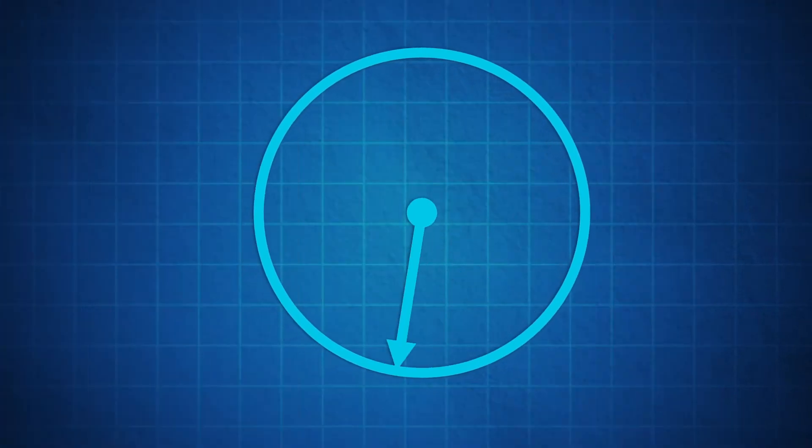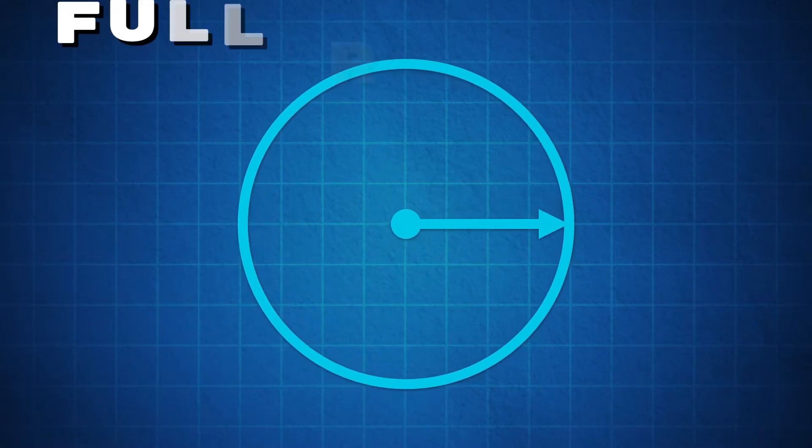When one side of the angle rotates one time around, it's called a full rotation, 360 degrees we have found.